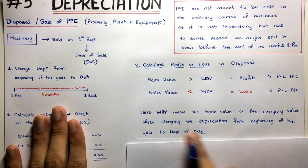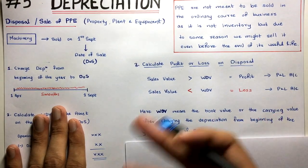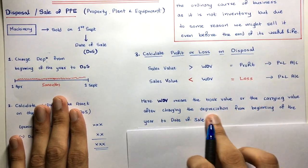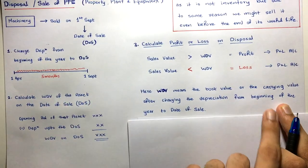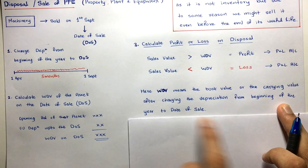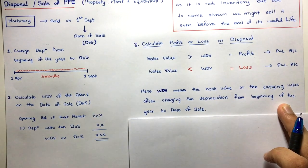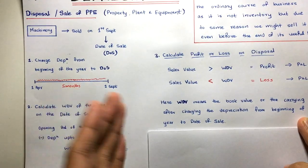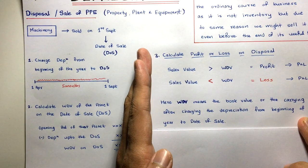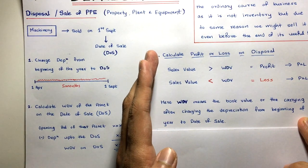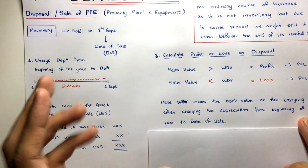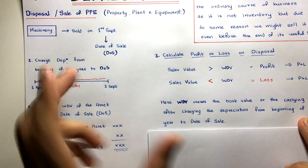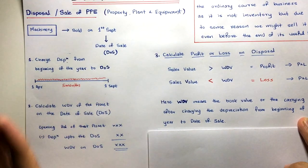WDV here means the book value or carrying value after charging the proportionate depreciation from the beginning of the year to the date of sale. In most cases, you will sell the asset in between the year — not at the beginning or closing date — so you will almost always need to calculate proportionate depreciation: 5/12, 6/12, 3/12, etc., depending on the date of sale.